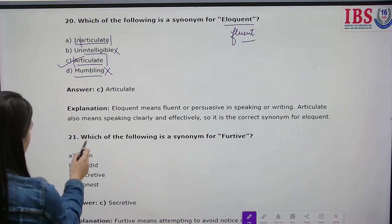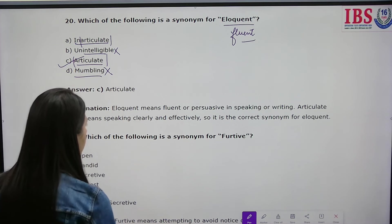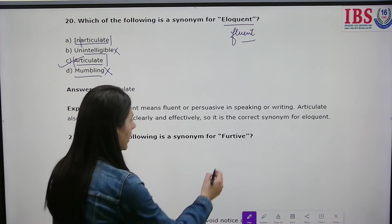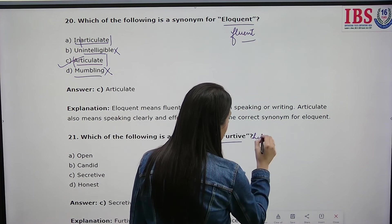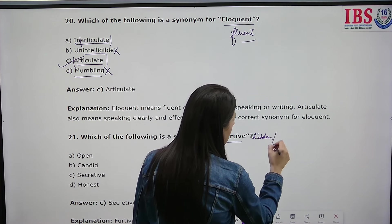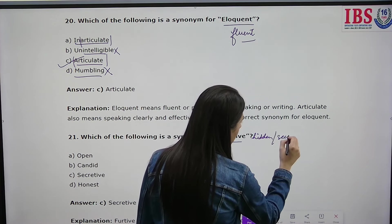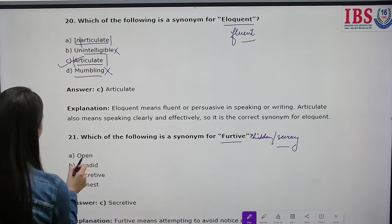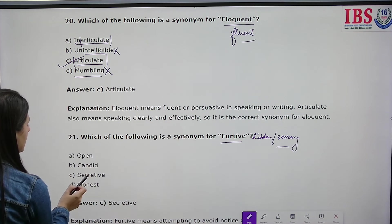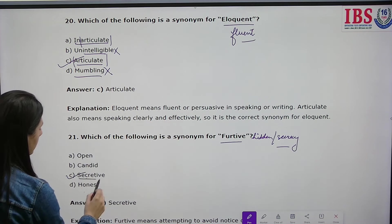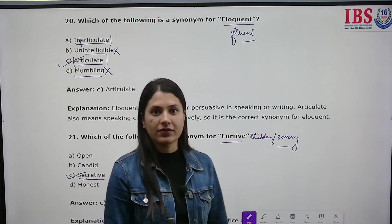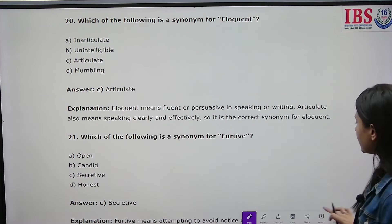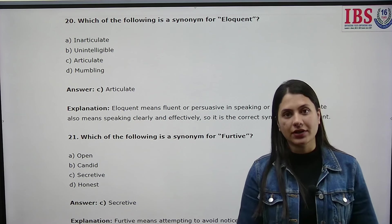Which of the following is a synonym for 'furtive'? Furtive means someone who works in a very hidden way — who operates with secrecy. The options are open, candid, secretive, and honest. Secretive is the correct answer because furtive means secretive. For example, 'this decision of yours was very furtive.'